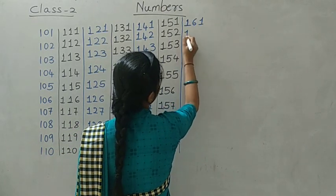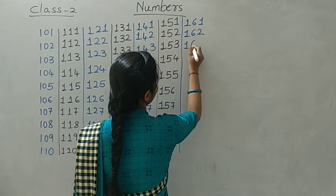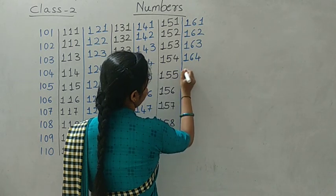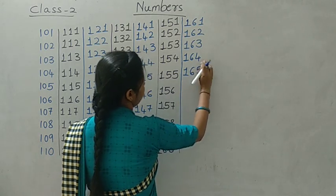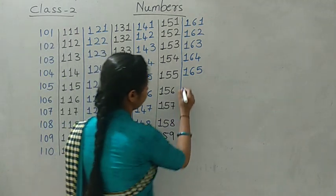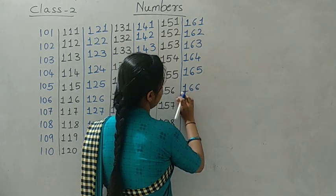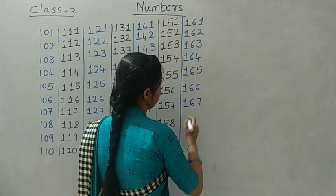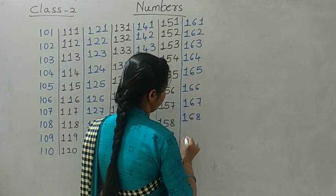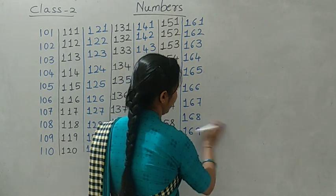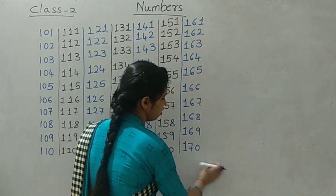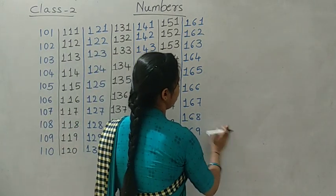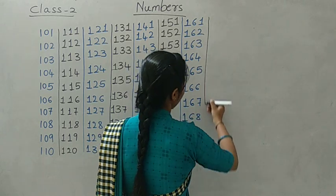161, 162, 163, 164, 165, 166, 167, 168, 169, 170. So this is about the next line. Take a scale and draw a proper line.